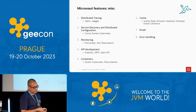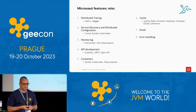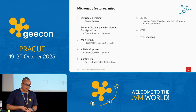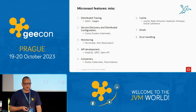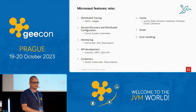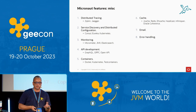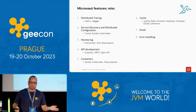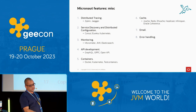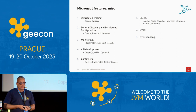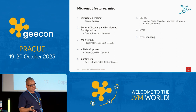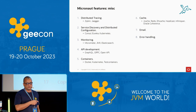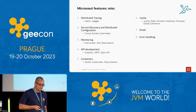Additional features include distributed tracing — important with microservices, something we should never overlook. Service discovery and distributed configuration like Eureka, monitoring with Micrometer and JMX, Elasticsearch, GraphQL, gRPC. Containers are supported — cloud-native by default — including Testcontainers, which is great. For caching, I'd highlight Oracle Coherence, which also has a community version worth looking at.